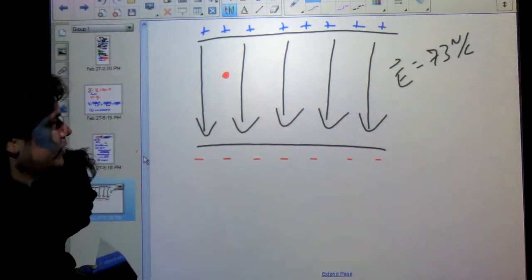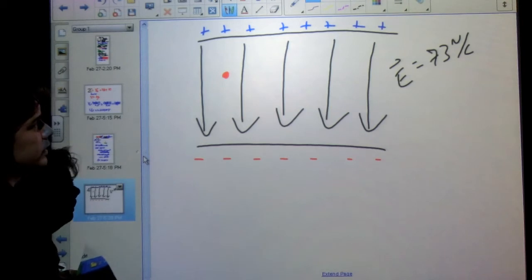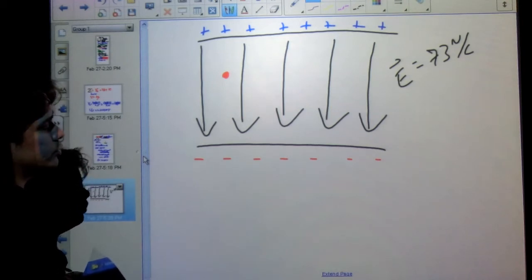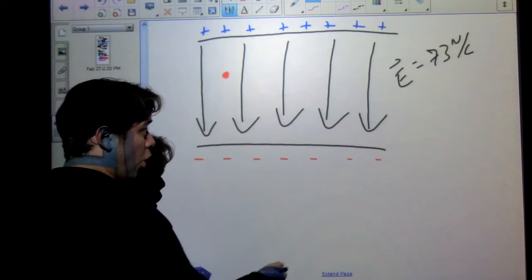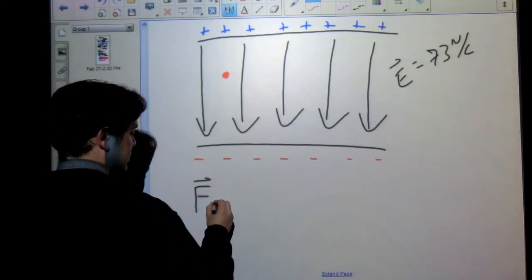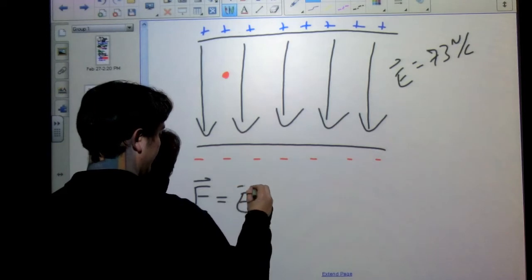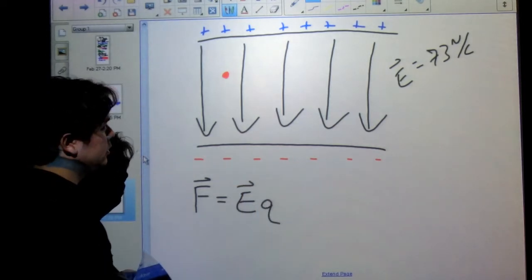All right, so I want to find the acceleration. I've got my electric field. How am I going to go about doing that? Well, one of the main equations that we had for an electric field that I told you was always the case was that the force a particle experiences is equal to the electric field times the charge of that particle, F = Eq.